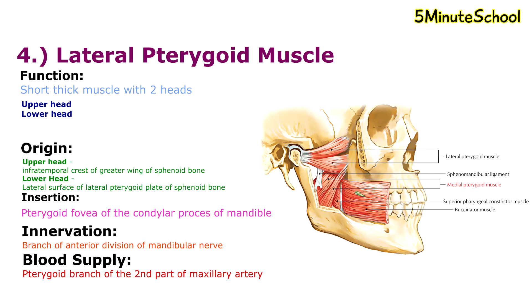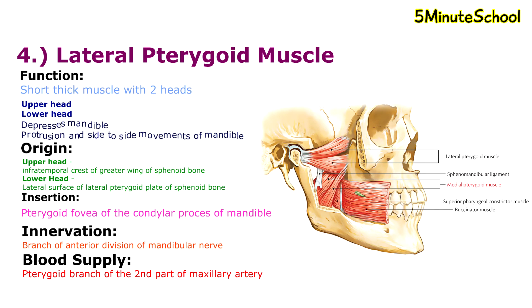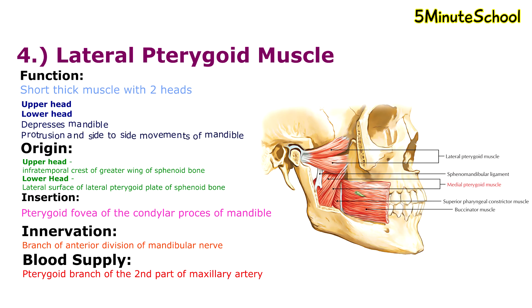The lateral pterygoid muscle is the main muscle of mastication which causes depression of the mandible — in other words, opening of the mouth. It also helps with protrusion and side-to-side movements of the mandible.